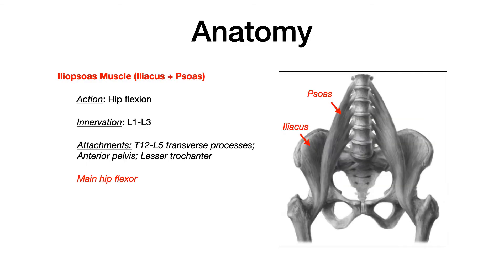The iliopsoas is comprised of the iliacus plus the psoas muscles. Because these muscles are collectively responsible for hip flexion, they are often grouped together. The iliopsoas is innervated from L1 to L3, with attachments from the transverse processes of T12 down to L5, also attaching on the anterior pelvis and down to the lesser trochanter. The key takeaway: the iliopsoas is the main hip flexor.